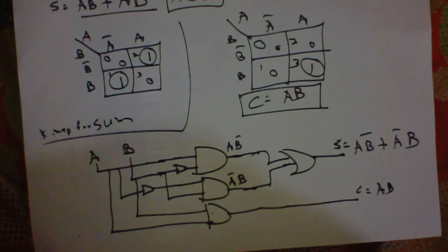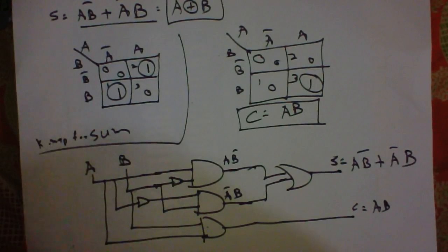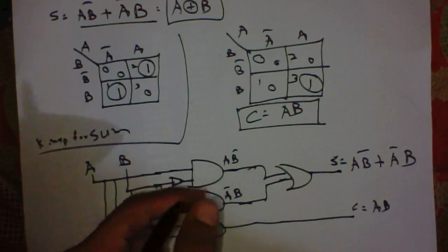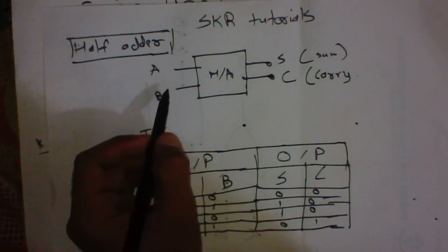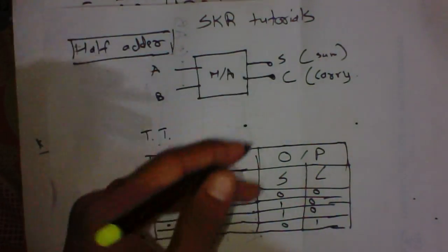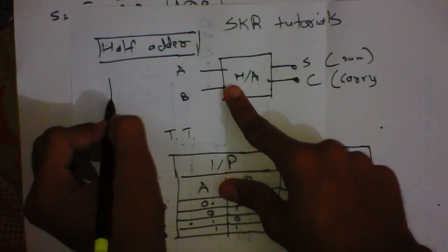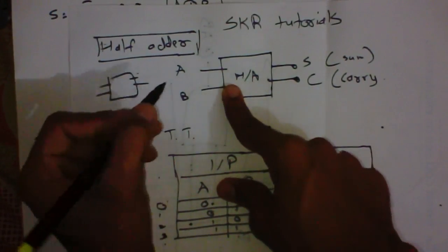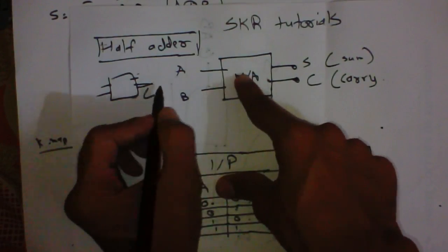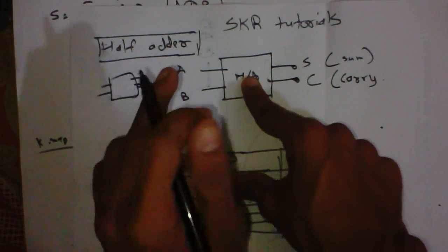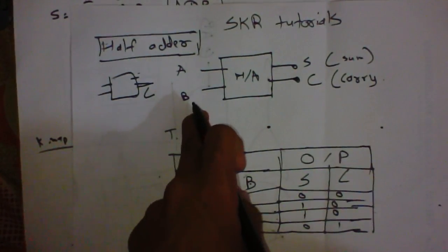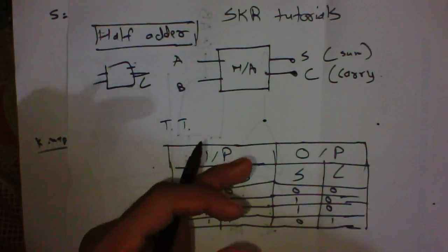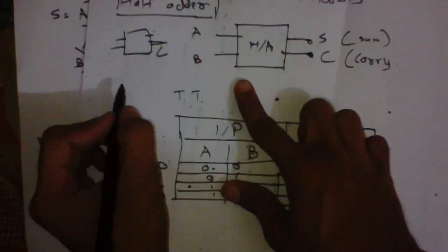The disadvantage of the half adder is that we cannot add the carry of the previous addition, because the half adder has only two inputs — we cannot add an additional input for the carry-in output of the previous operation. If we have already performed an addition or subtraction and we have a carry, we have to apply that carry in the next operation, which we cannot do with the half adder. This is the disadvantage of the half adder. We can overcome this disadvantage by using a full adder, which we will discuss in the next tutorial. Thank you for watching this tutorial.